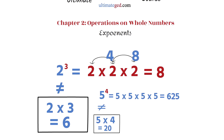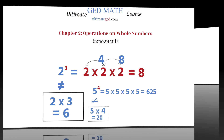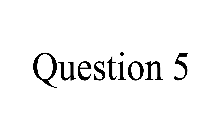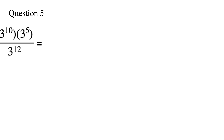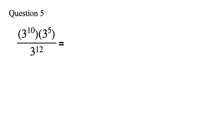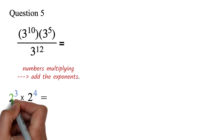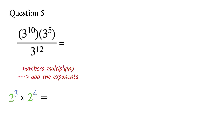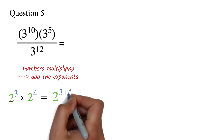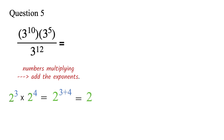Now let's look at our question. Question 5: we are supposed to calculate 3 exponent 10 times 3 exponent 5, all over 3 exponent 12, without using a calculator. If you have two numbers multiplying and the bases are the same, you can just add the exponents. For example, 2 exponent 3 times 2 exponent 4 — because they both have the same base of 2 — we can add the exponents to get 2 exponent 7.